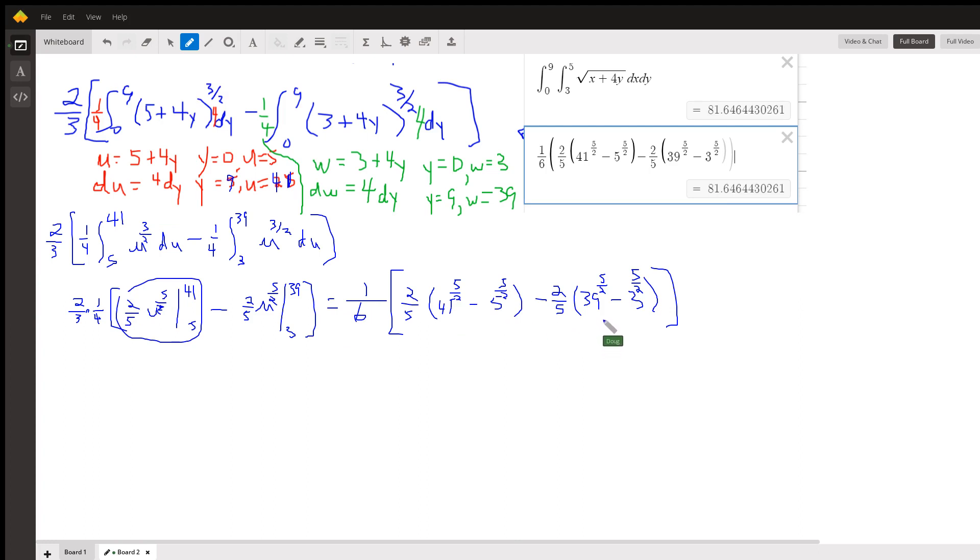And here's the same thing with the limits of 3 and 9. And here's sort of proof in the upper right-hand corner that this ugly-looking expression, which you could simplify, does indeed result in the value returned by the Desmos Online Graphing Calculator.